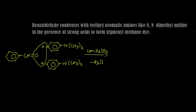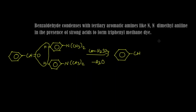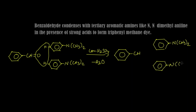What happens is this oxygen and these two hydrogens will get eliminated as a water molecule — that is, dehydration takes place. The remaining things will get condensed together. The product we get is: CH here, N(CH₃)₂ and N(CH₃)₂. This compound is a triphenylmethane dye; the commercial name is malachite green.